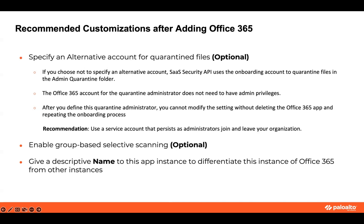Group-based selective scanning is also an option to configure after adding the cloud app, but it is better to do it before. If you enable this feature after your cloud app is added, you must delete the cloud app instance, then reconnect the cloud app to SaaS Security API and initiate a new scan to rediscover all assets and events for all users. The result is that all assets and events will be deleted and incidents reported for users will be closed. And of course, giving a descriptive name to the app instance helps with differentiating this instance of Office 365 from other instances.